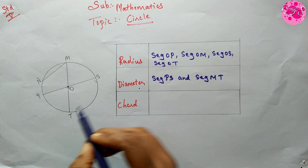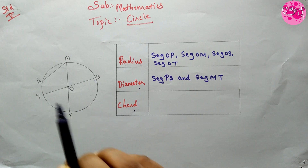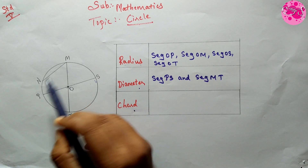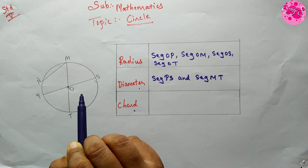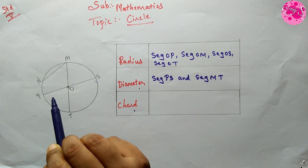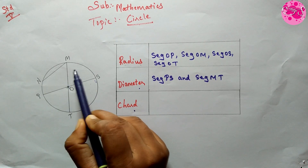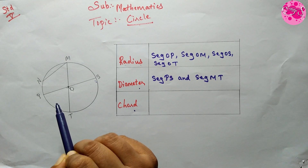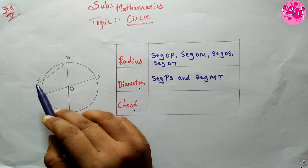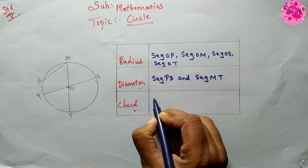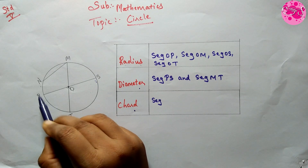Next is the chord. The segment joining any two points on a circle is called the chord of a circle. We have to find the segment which touches two points on the circle. So the chords are: segment NM, segment PS, and segment MT.